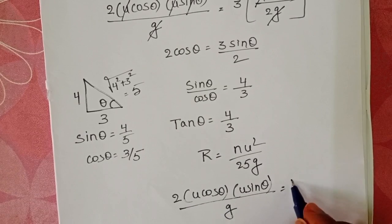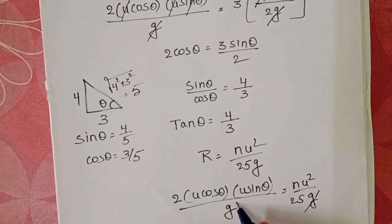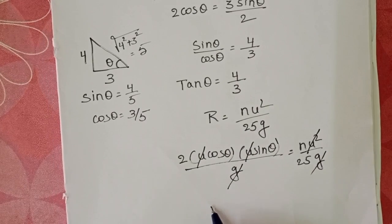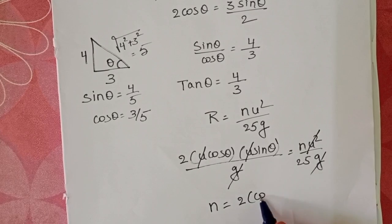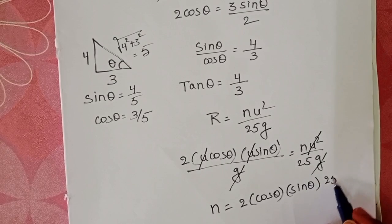Setting nu²/25g equal to the range formula 2ucosθusinθ/g. On both sides, g cancelled, u² also cancelled. From this, n equals 2 times cosθ times sinθ times 25.